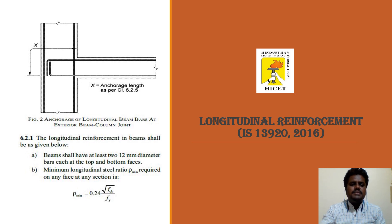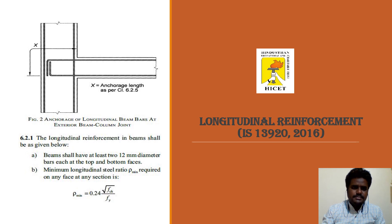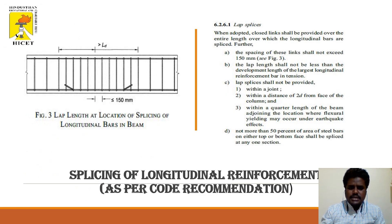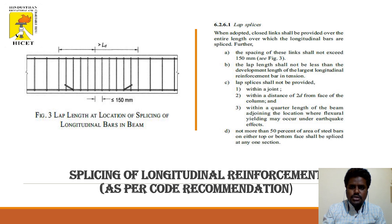The minimum longitudinal steel reinforcement ratio at any section is given by: p_min = 0.24 × √(fck / fy), where fck is the concrete compressive strength and fy is the yield strength of the steel reinforcement. For lap splices, ties or stirrups shall be provided as closed links over the entire lap length. Spacing of links shall not exceed 150 mm, and the lap length shall not be less than the development length of the largest longitudinal bar in tension.